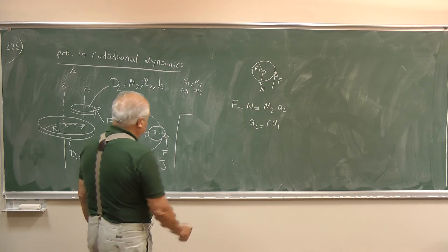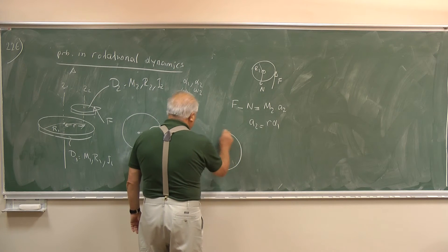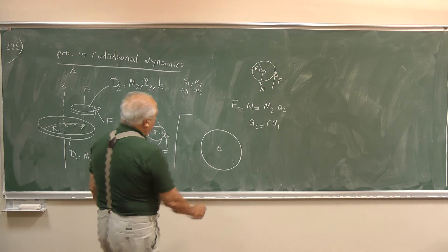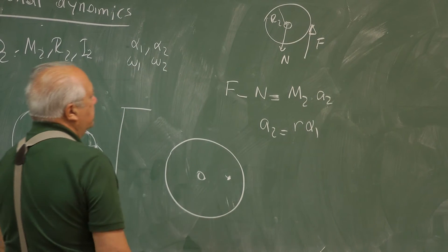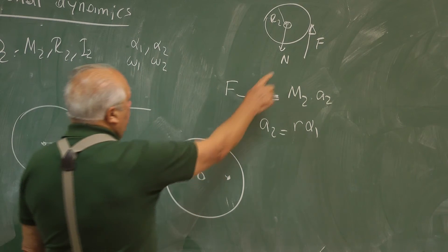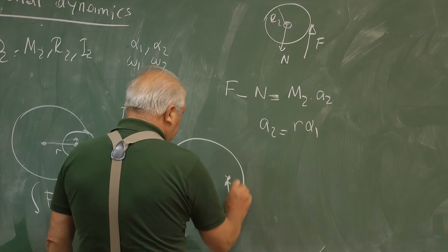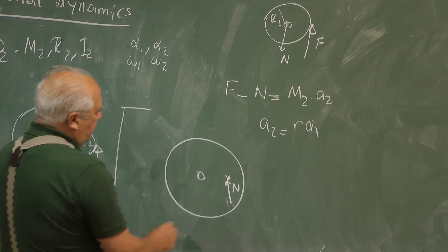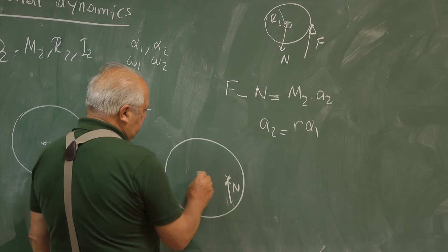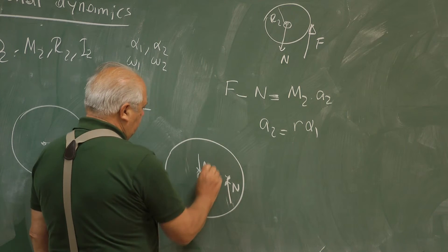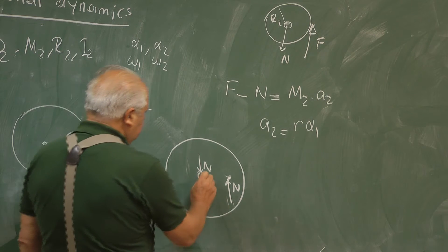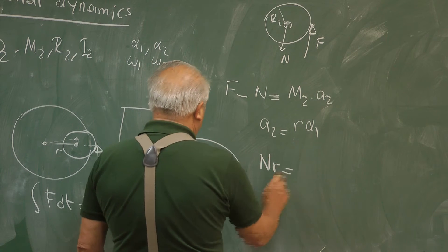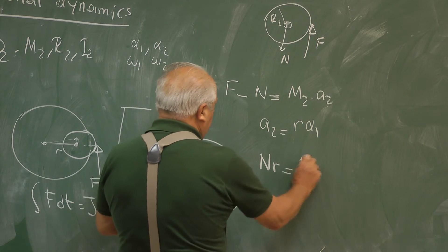What about the big disk? Here is the big disk. Here, that's the position of the small disk. So action-reaction force. There is an N here. And of course, this disk is not moving anywhere. The axis is fixed. So the axis is applying a force equal and opposite to N. So this is R, and Nr is equal to I1 times α1.